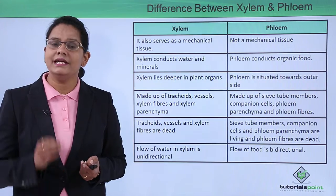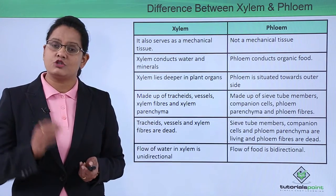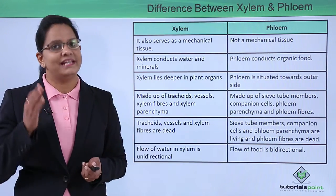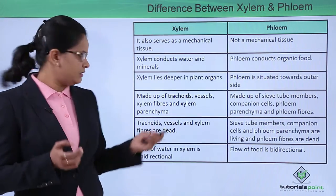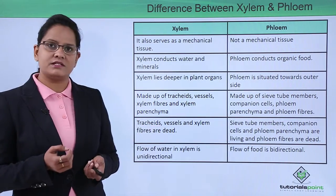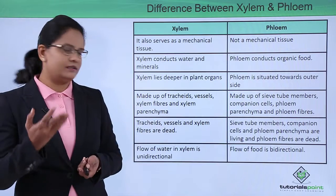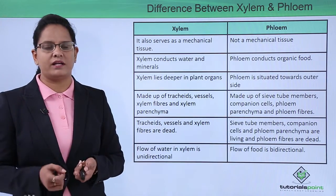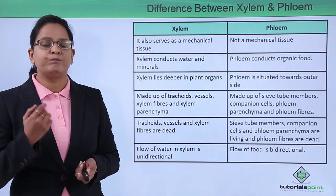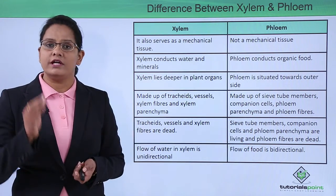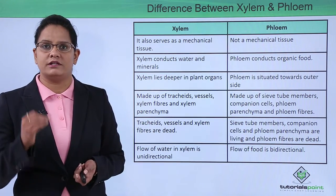In the case of phloem, three out of the four cell types are living cells, so phloem is a living tissue. To summarize: in xylem, three cell types are dead and only the fibers are living; in phloem, three cell types are living and only the fibers are dead.